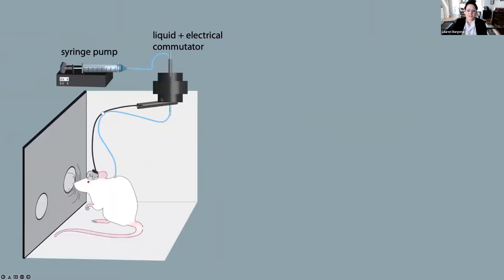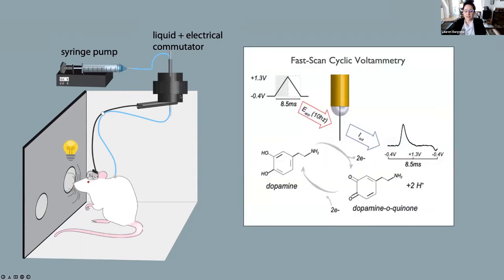To test this hypothesis in rodents, I used a model of drug use in which rats self-administered cocaine by nose-poking into a port to receive intravenous cocaine infusions. This gave the animals complete control over how much drug they consumed and allowed comparisons between animals with different drug intake patterns. Importantly, each drug infusion was paired with the presentation of a drug-paired cue, so animals came to associate this cue with drug delivery. I used a method called fast-scan cyclic voltammetry to measure dopamine responses stimulated by drug-paired cues, by implanting tiny electrodes — smaller than the diameter of a human hair — into the striatum.